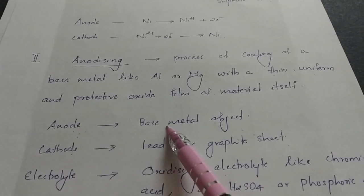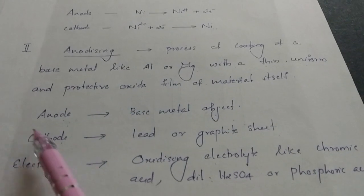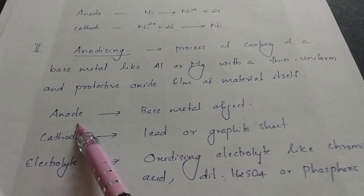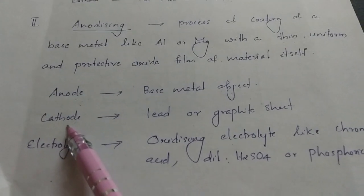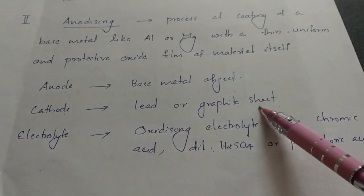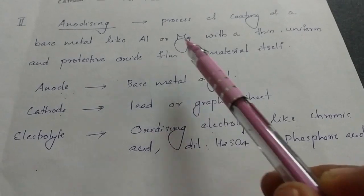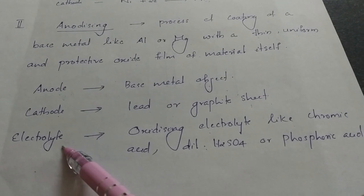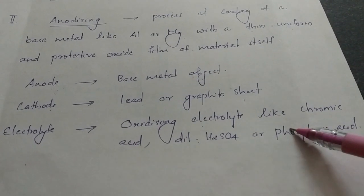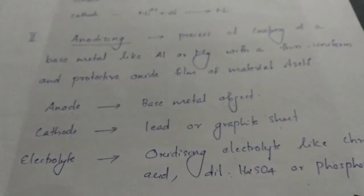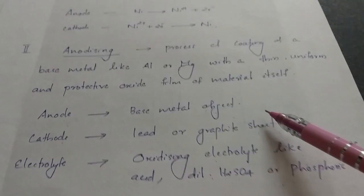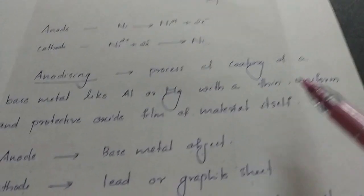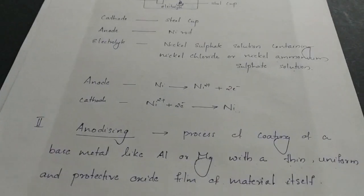In anodizing, the base metal object — aluminum or magnesium — acts as the anode, unlike in electroplating where it is the cathode. The cathode is a graphite sheet or lead sheet. The base metal object at the anode undergoes oxidation, forming a thin, uniform, and protective oxide film of the material itself.